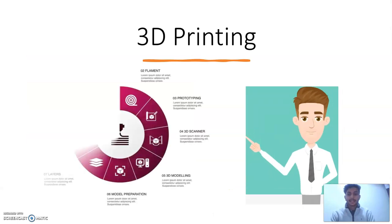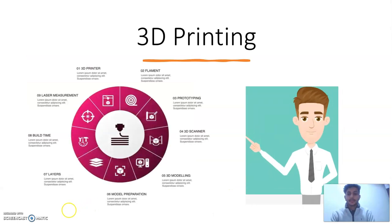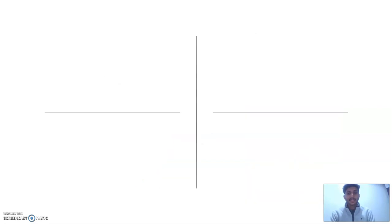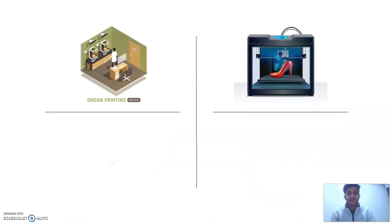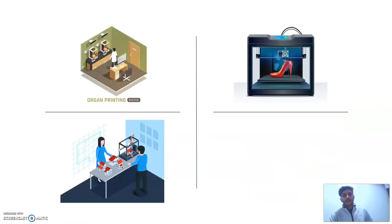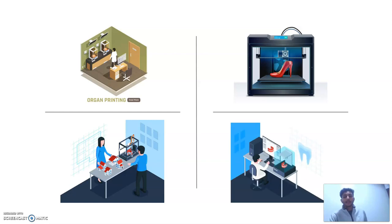3D printing is a process of additive manufacturing of objects using a 3D printer, filament prototyping, 3D scanner, 3D modeling, model preparation, build time, and laser measurement. 3D printing is drastically disrupting every industry. For example, we can print organs, dental implants, footwear, and even houses and many other things.